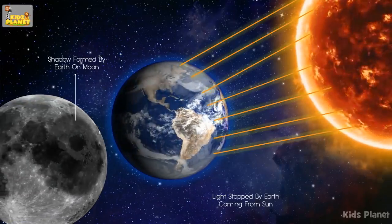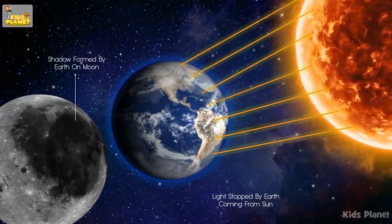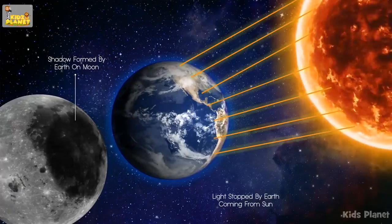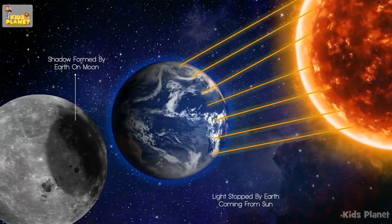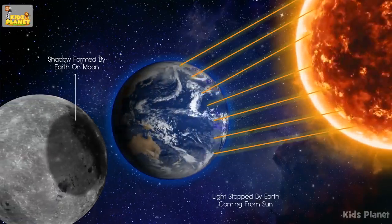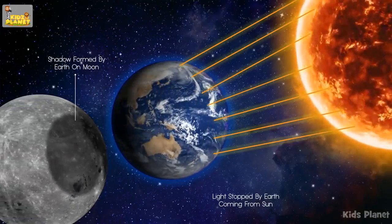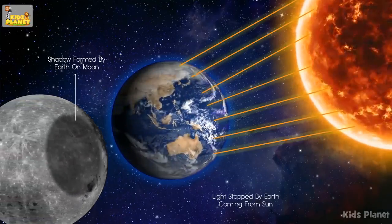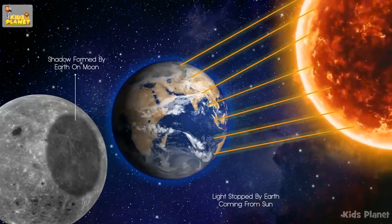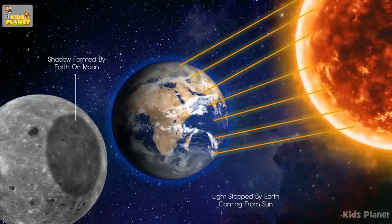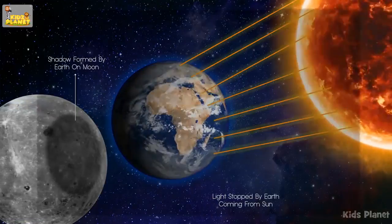A lunar eclipse occurs when the earth comes between the sun and the moon. The earth's shadow falls on the moon. On some parts of earth, people cannot see the moon.